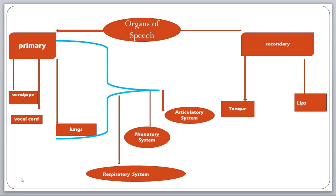To summarize: the organs of speech are divided into primary organs — the lungs, vocal cord, and windpipe — and secondary organs — the tongue and lips. When we produce a speech sound, air enters through the mouth, goes to the lungs, and the lungs pass it to the vocal cord, which then passes it to the windpipe.